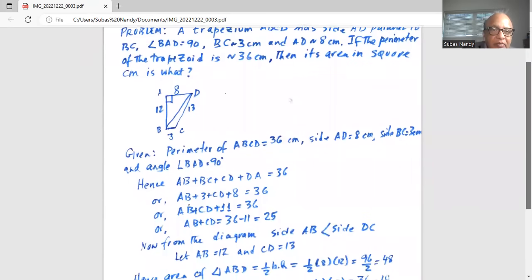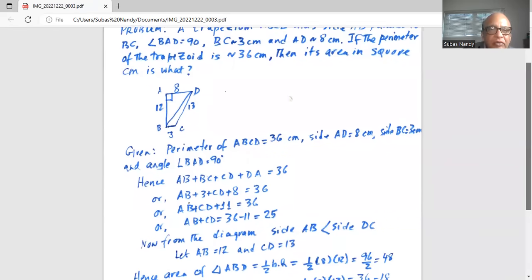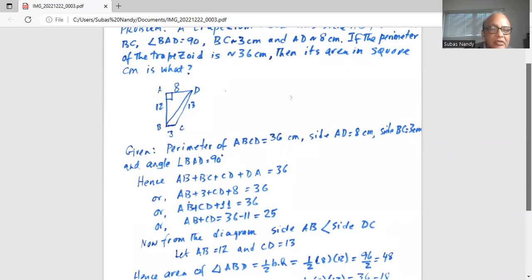Now from the diagram, side AB is less than side DC. Also, if AB is 12, then CD has to be 13. Now if AB is 12 and AD is 8 and DC is 13 and CB is 3, then the sum of the four sides is 36.